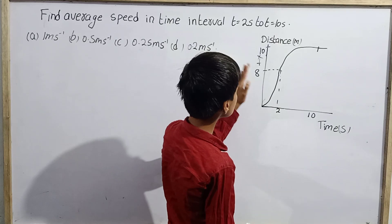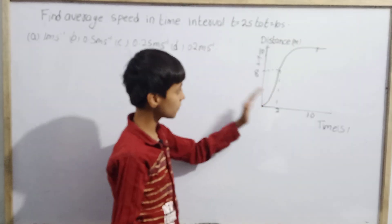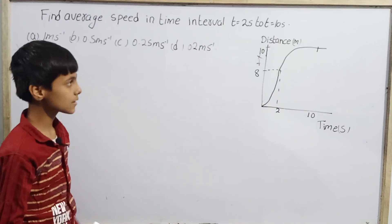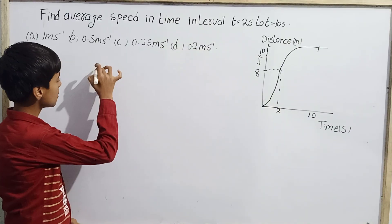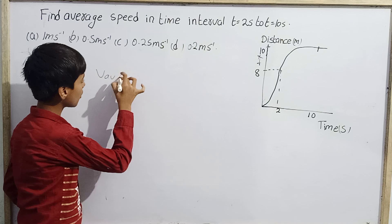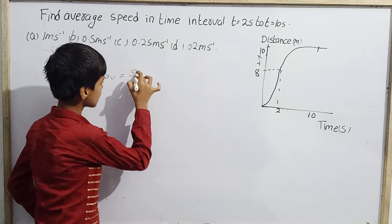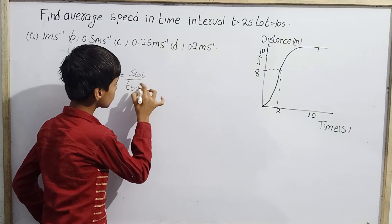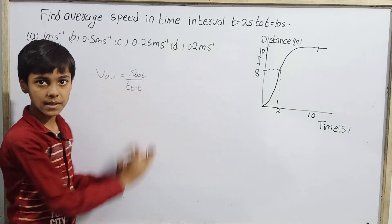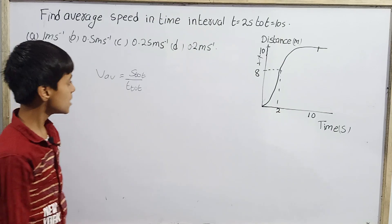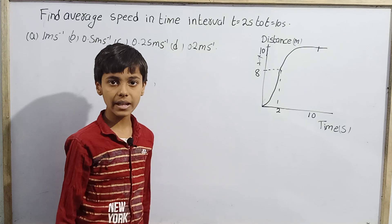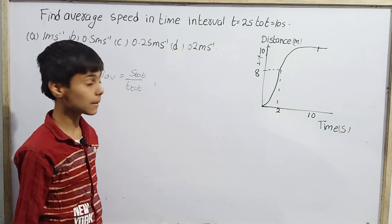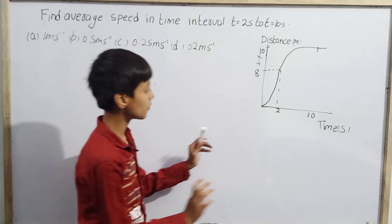According to the graph, we have to find the actual average speed of the particle. The average speed formula is: total distance covered by the particle divided by the total time taken to cover that distance. We can apply this formula here.